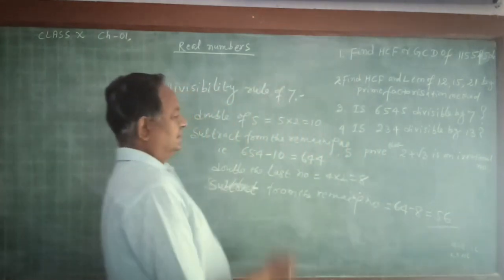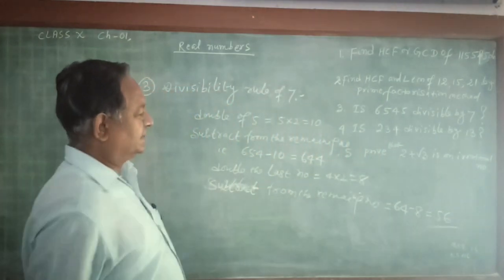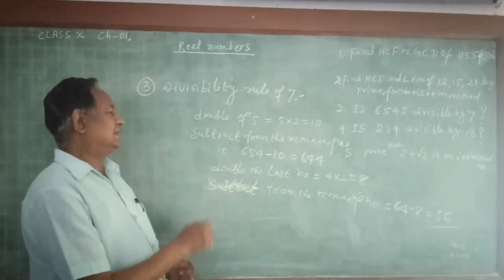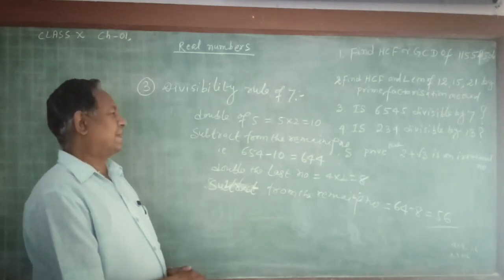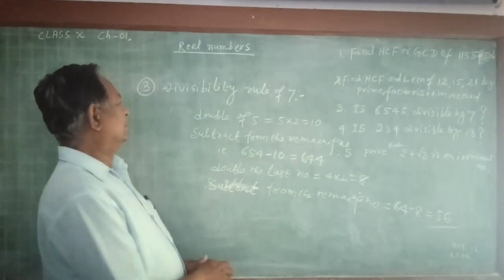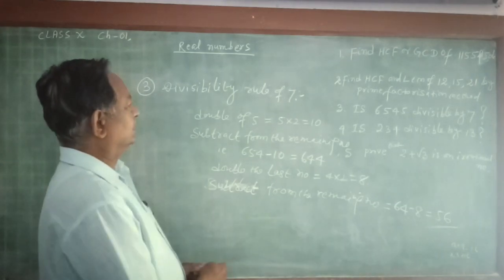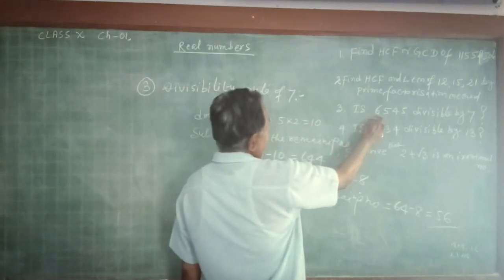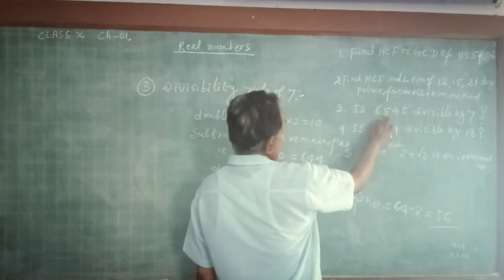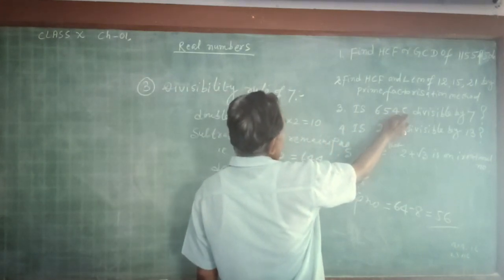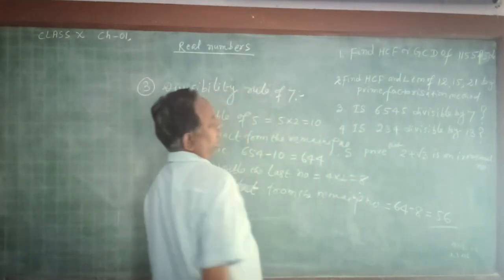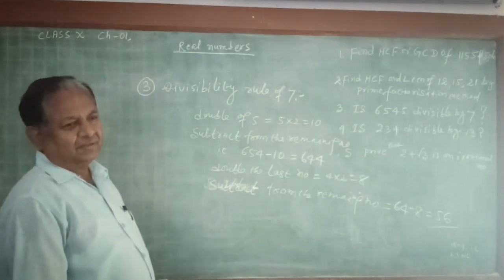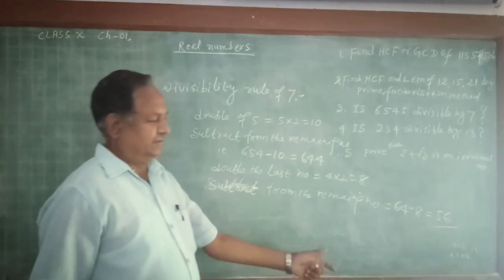Since 56 is divisible by 7, so the given number 6545 is also divisible by 7.